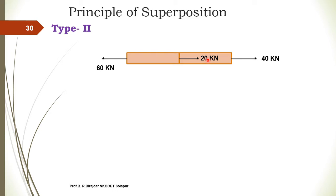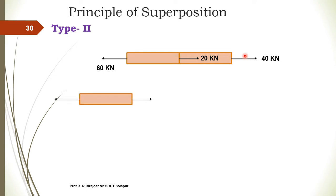Here we have two bodies connected. On the left-hand side a 60 kN force acts, in between a 20 kN force, and on the right-hand side a 40 kN force. Since both ends are free, we can start the free body diagram from either side. First, we consider the first body.